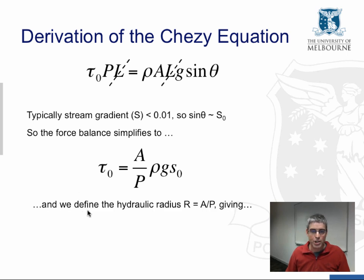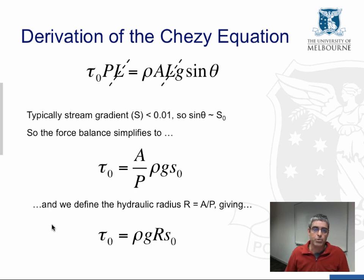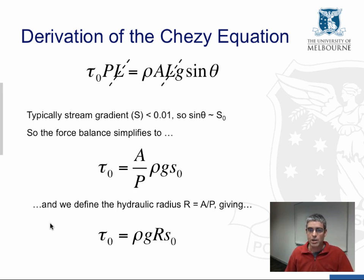We define hydraulic radius — a new term — which represents the geometry of the channel as cross-sectional area divided by wetted perimeter. This gives us the formula for bed shear stress under uniform flow conditions as the product of density, gravity, hydraulic radius, and stream gradient: τ = ρgRS.